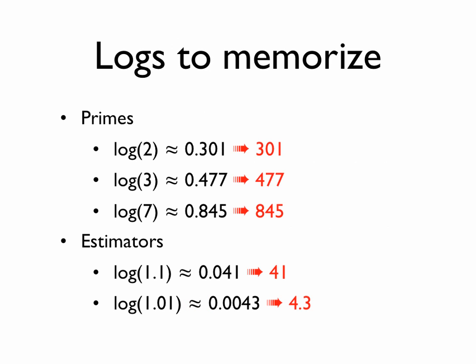So you can see that with these five numbers, the log of 2, log of 3, log of 7, and then with these two estimators, 10% and 1% correction, you can estimate the log of any number on the order of about a couple of minutes, one or two minutes in your head with practice of addition of three-digit numbers.